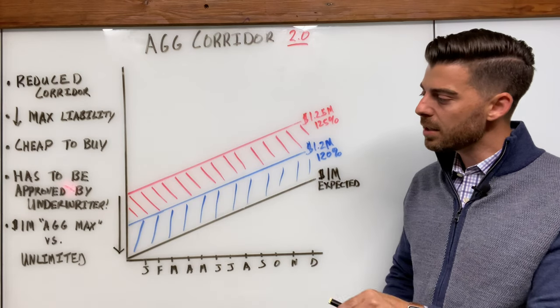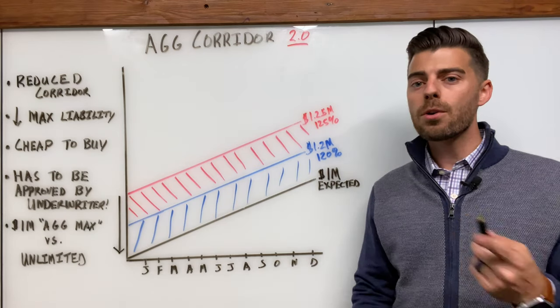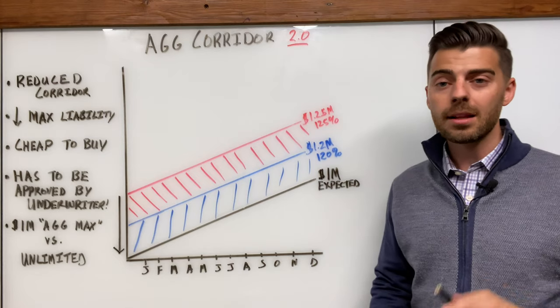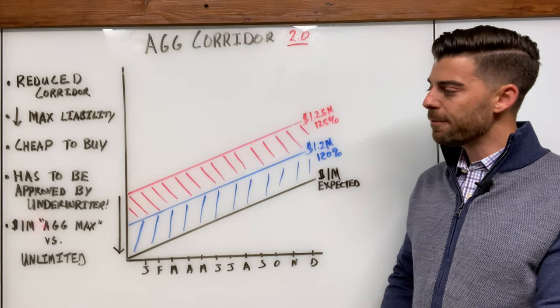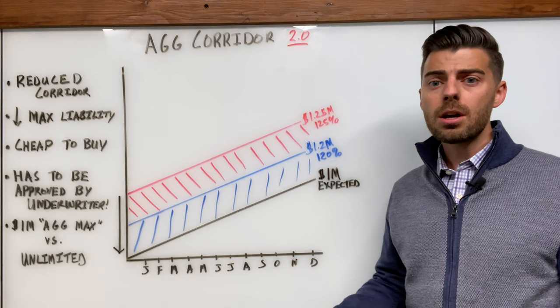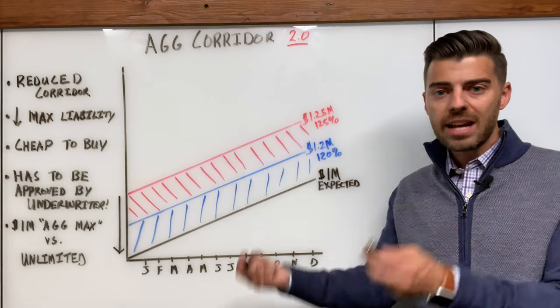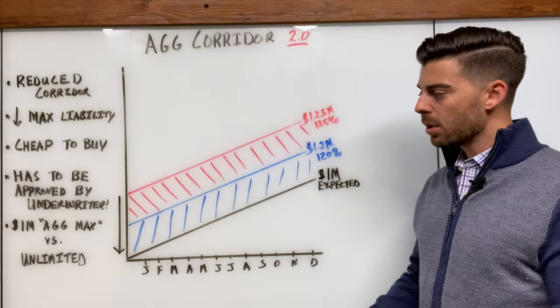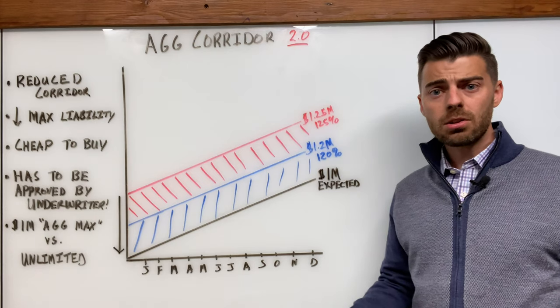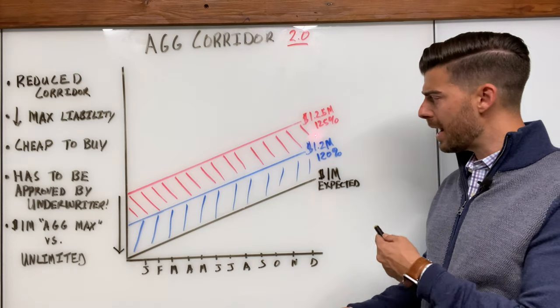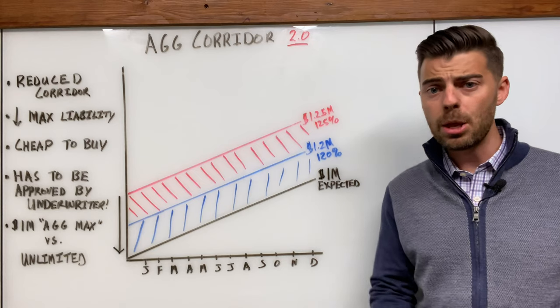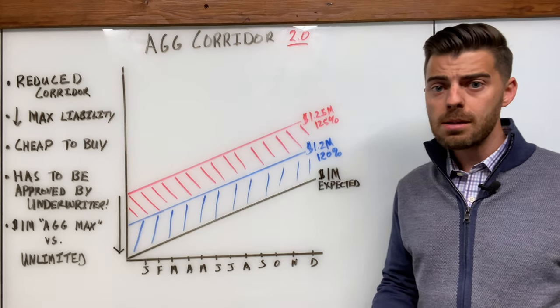And another piece that's related to this that I wanted to stress a little bit further that I didn't go into a whole lot on the last video, is by default, usually you're going to get a million dollar ag max from the carved out stop loss carriers. So, a lot of people go, well, crap, that concerns me because what if I go over my attachment point, they're only going to pay up to a million dollars of aggregate premium.